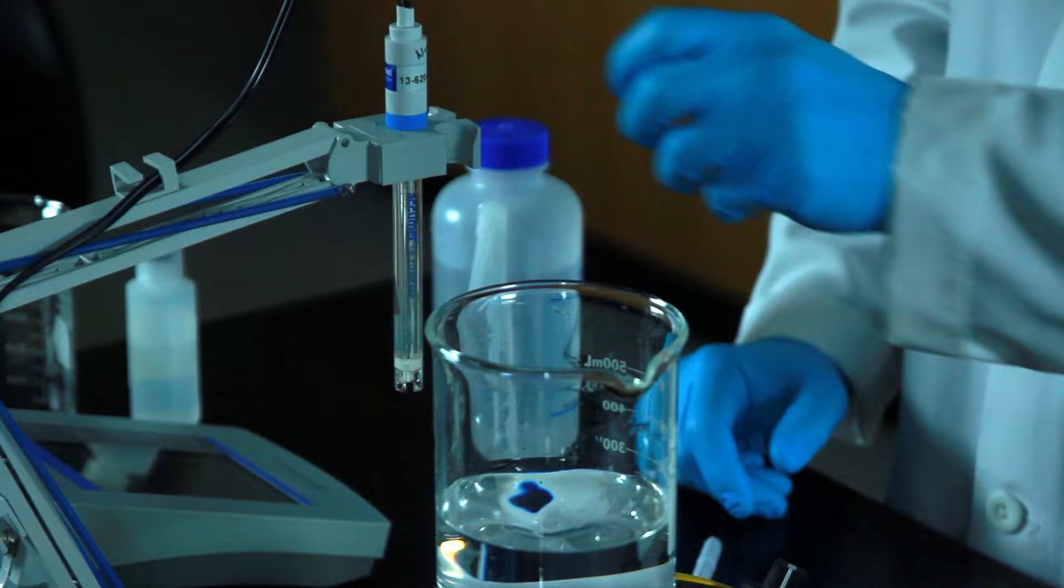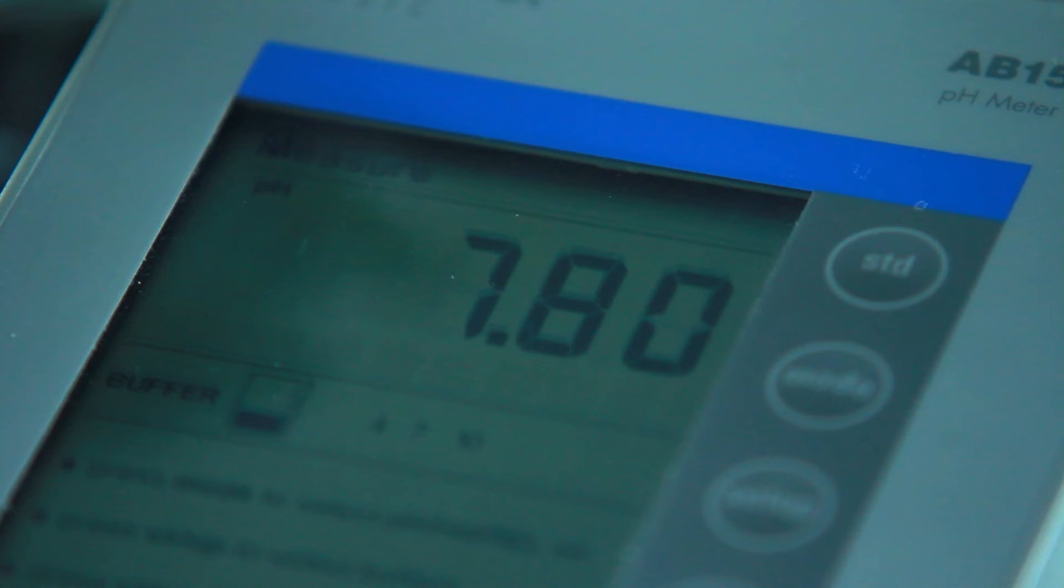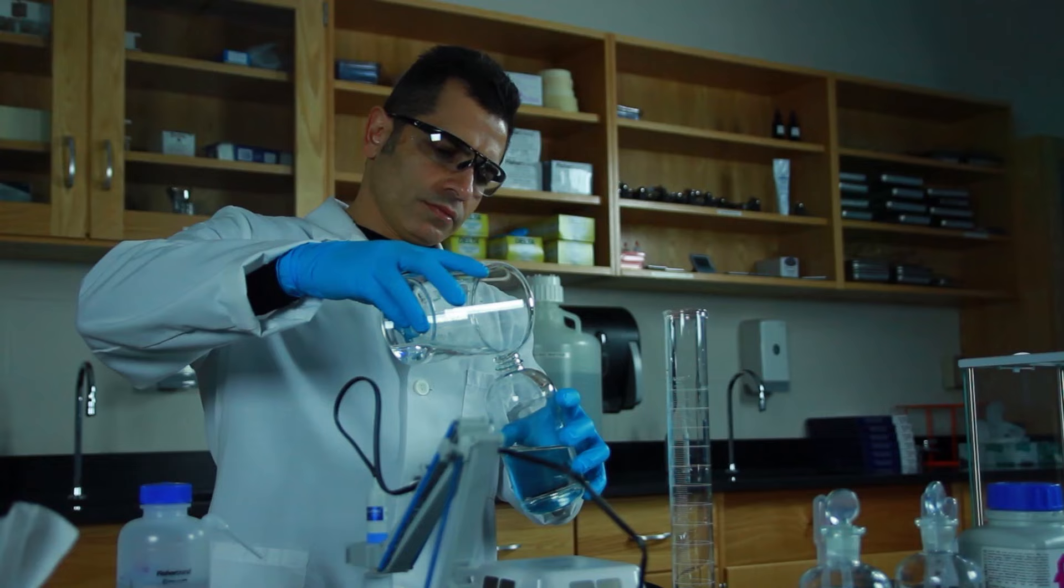Transfer the Tris buffer back into the beaker. Insert the pH meter probe and verify that the pH is still 7.8.